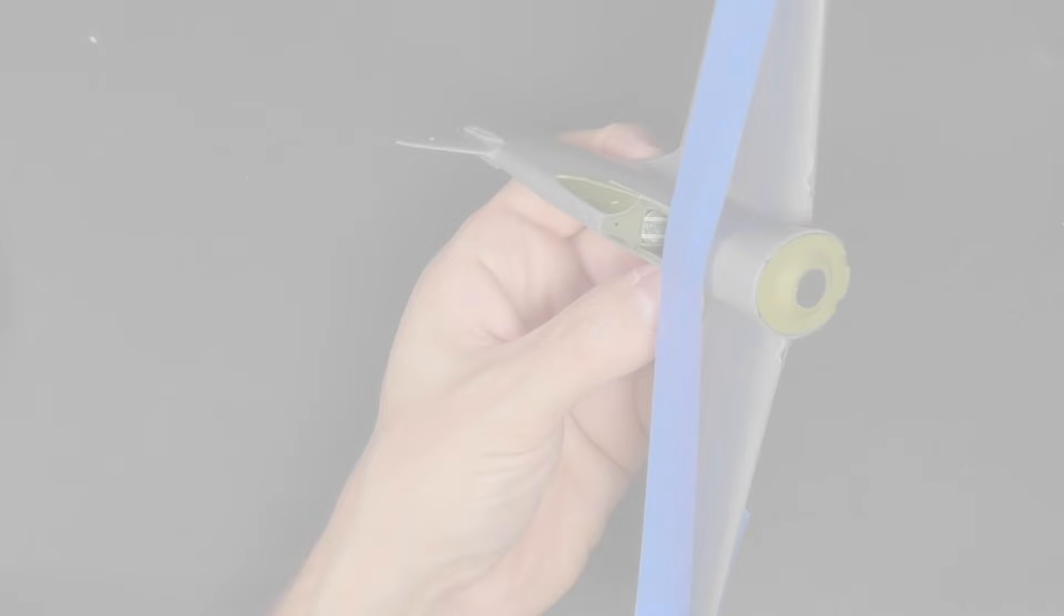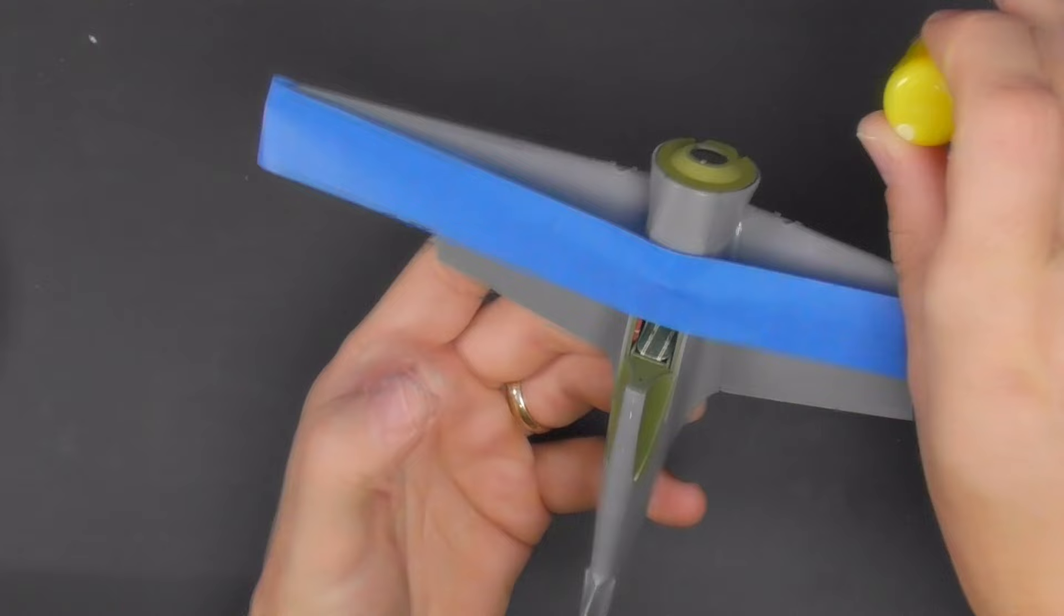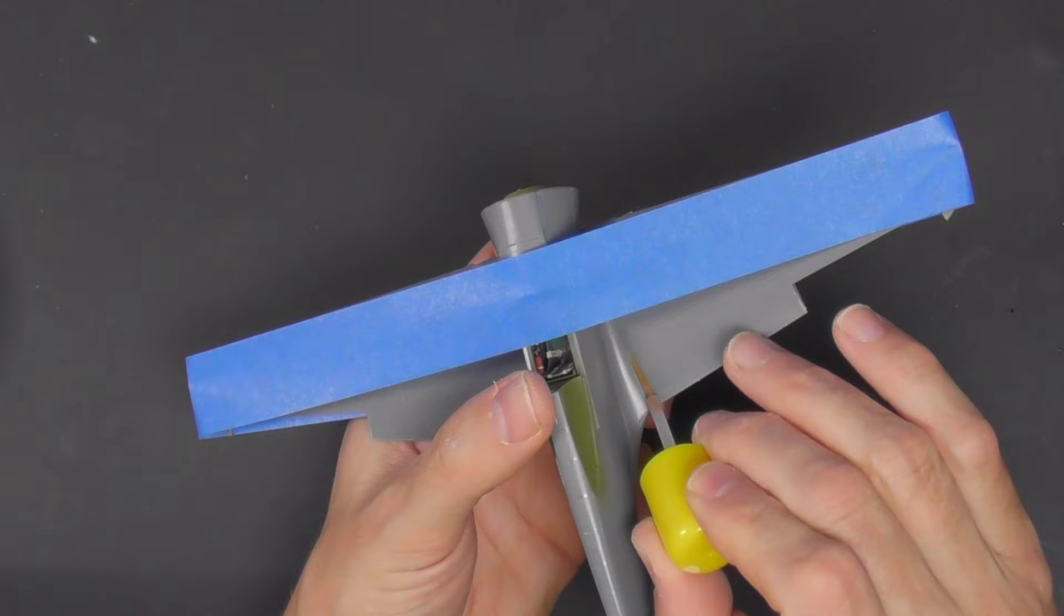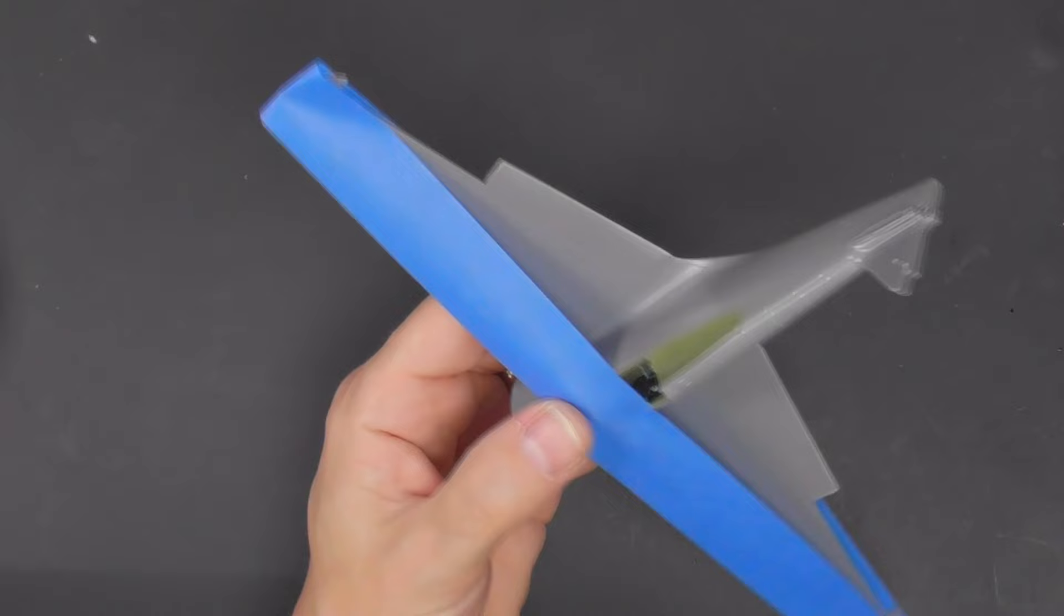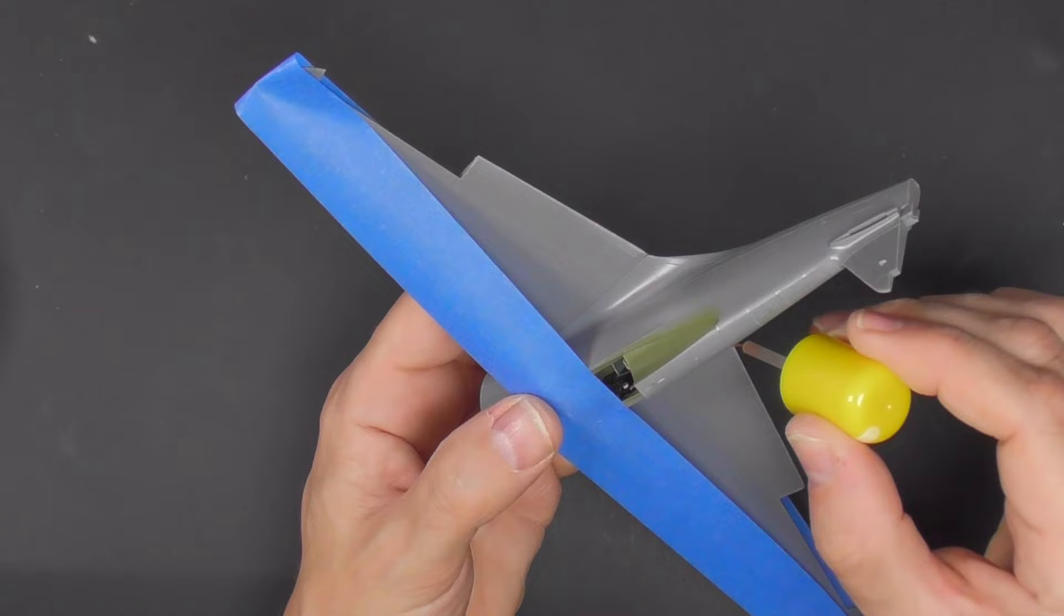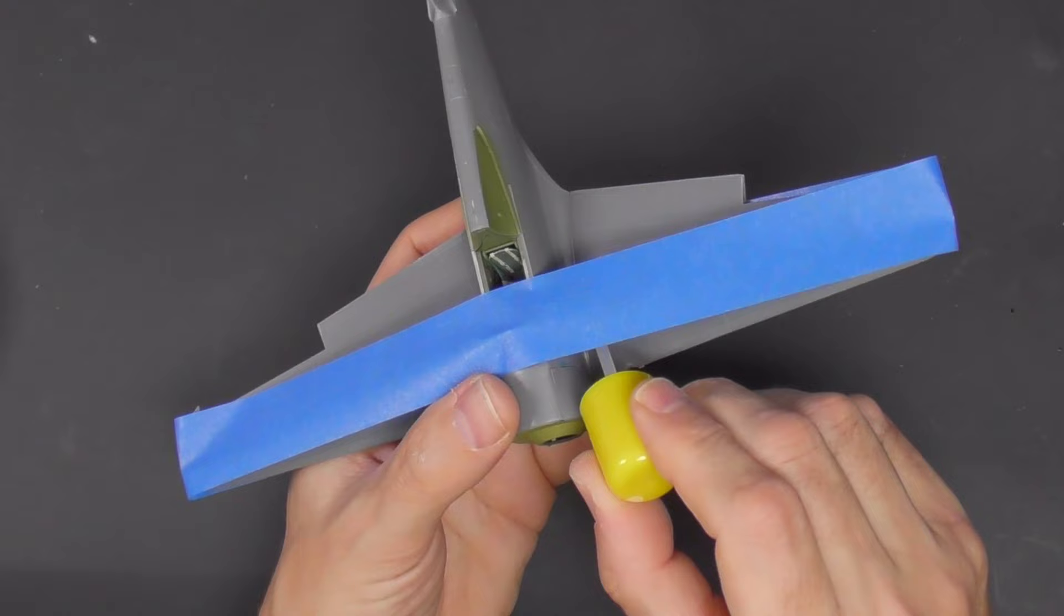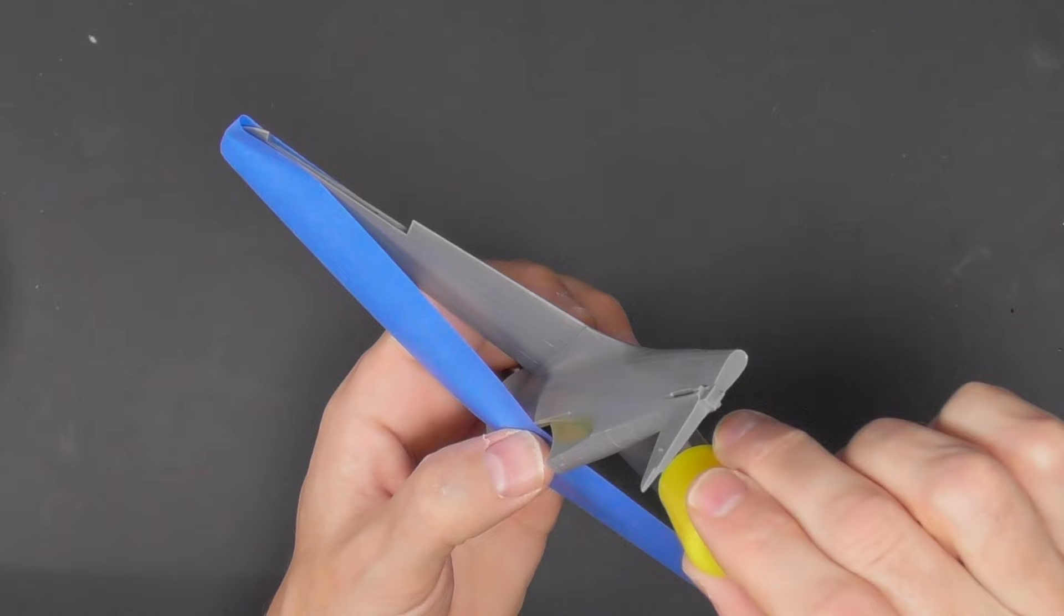That seam that you can see me putting the glue on there, I did run a little bit of Mr. Surfacer over that just to eliminate it completely. Just to help with the seam, I did use a bit of tape just to provide that little bit of pressure, and then ran the glue along. Then I left that to dry overnight to properly harden off. Again, the advantage of the Ammo glue and the applicator.